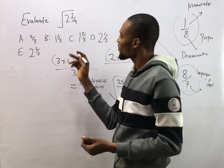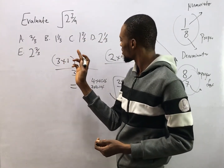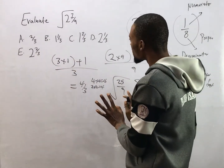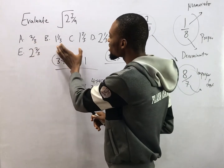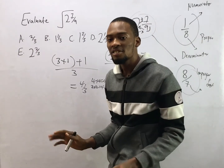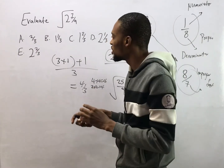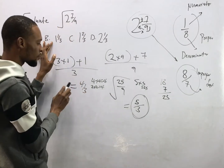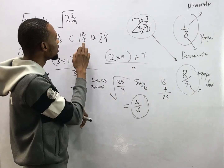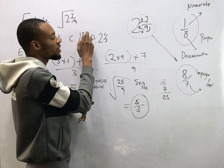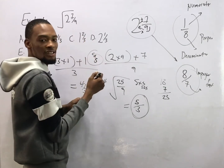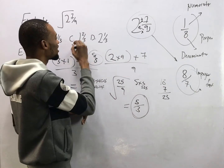But notice — is 5 over 3 listed in the options? Not directly. So what you do is change all the mixed fractions in the options to improper fractions. Whichever one gives you 5 over 3 is your answer. We already converted option B and got 4 over 3, so that is not the answer. The answer is 1 whole number 2 over 3, which is option C.